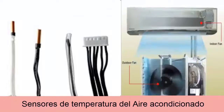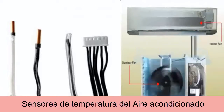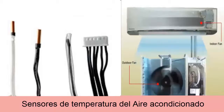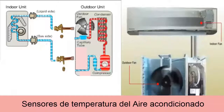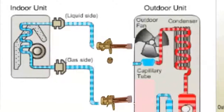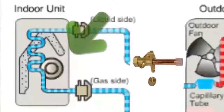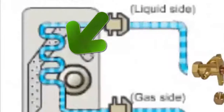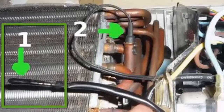In this video, we will talk about the number of temperature sensors that an air conditioner can have and the fault codes they can generate. The two most common sensors in air conditioning equipment are: 1. The Ambient Temperature Sensor, which measures the temperature of the return air to average the temperature of the conditioned space.